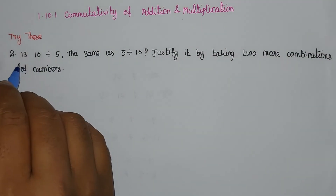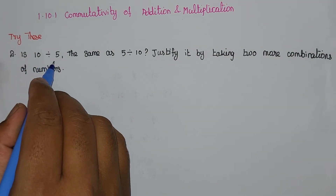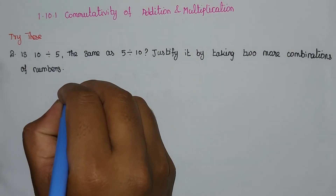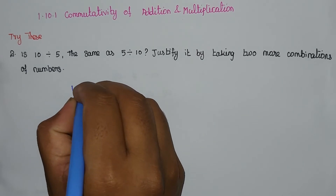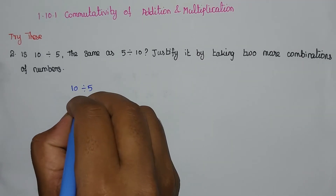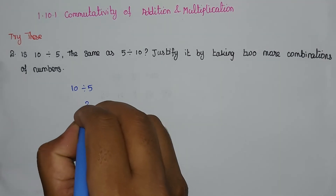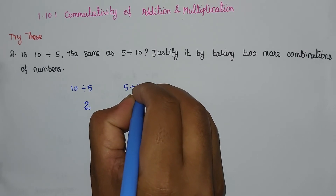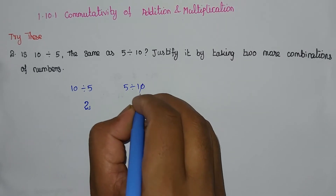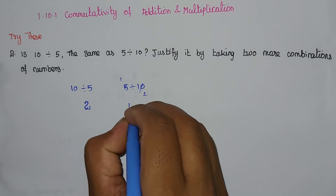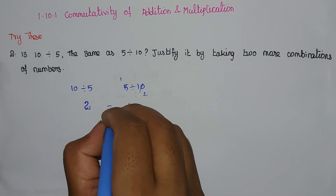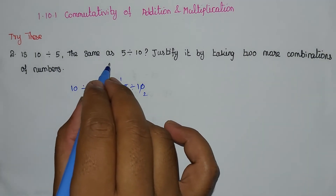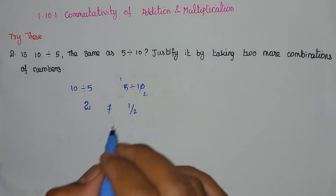Problem Number 2: Is 10 divided by 5 the same as 5 divided by 10? 10 divided by 5 gives 2, while 5 divided by 10 gives 1 by 2. So 2 is not equal to 1 by 2 — it is not the same. Justify it by taking 2 more combinations of numbers.